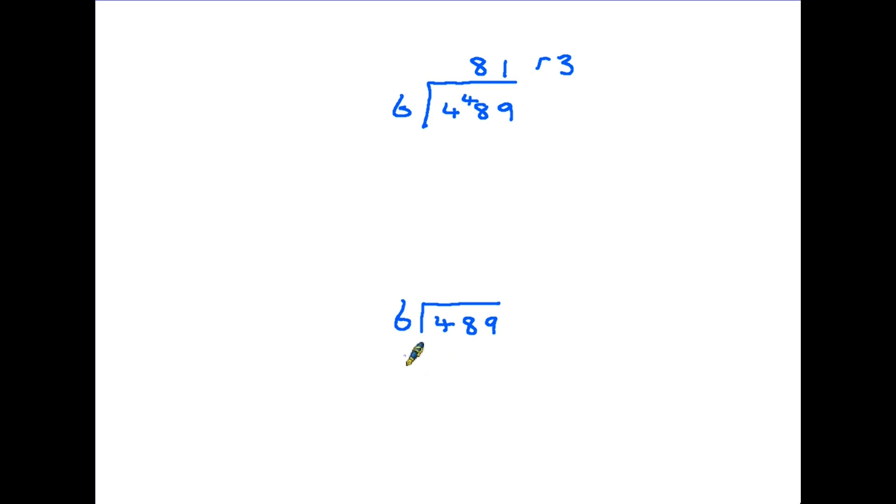So let's have a look at this slowly. We start in exactly the same way. How many sixes are there in 4? None. So we move the 4 onto the next column. How many sixes are there in 48? There are 8 sixes in 48, so the answer is going the same as the top at the moment. How many sixes are there in 9? There is 1 six in 9, but of course we've got 3 left over.